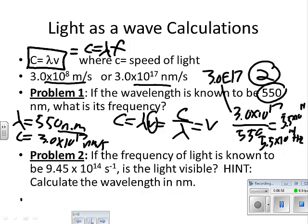Okay, problem two. So you're starting out with a frequency. I'm going to use F equals 9.45 times 10 to the fourteenth. We're going to use the speed of light. C equals the wavelength.